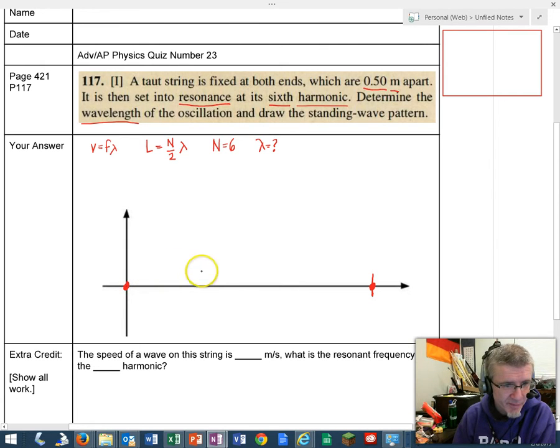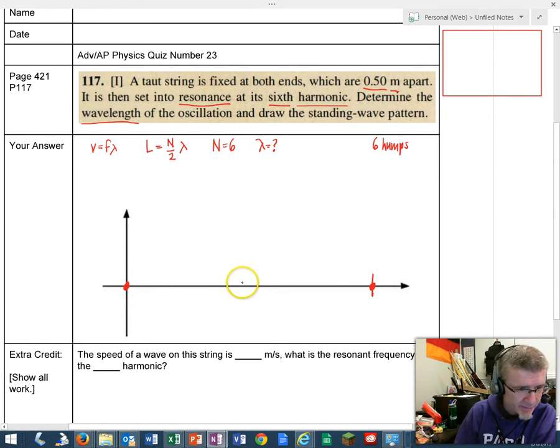A normal string would just be flat. This string is in the sixth harmonic. That means there are six humps, so to speak. At one point, a hump that's up over time will eventually become a hump that goes down. That's why it looks like it kind of fills this space. We've got three that have to fit in every half, so I need to divide this into thirds.